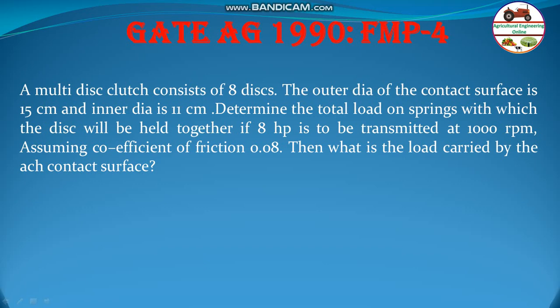The clutch consists of 8 discs. The outer diameter of the contact surface is 15 cm and inner diameter is 11 cm. Determine the total load on the spring with which the discs will be held together if 8 HP is to be transmitted at 1000 RPM, assuming coefficient of friction 0.08. Then what is the load carried by each contact surface?